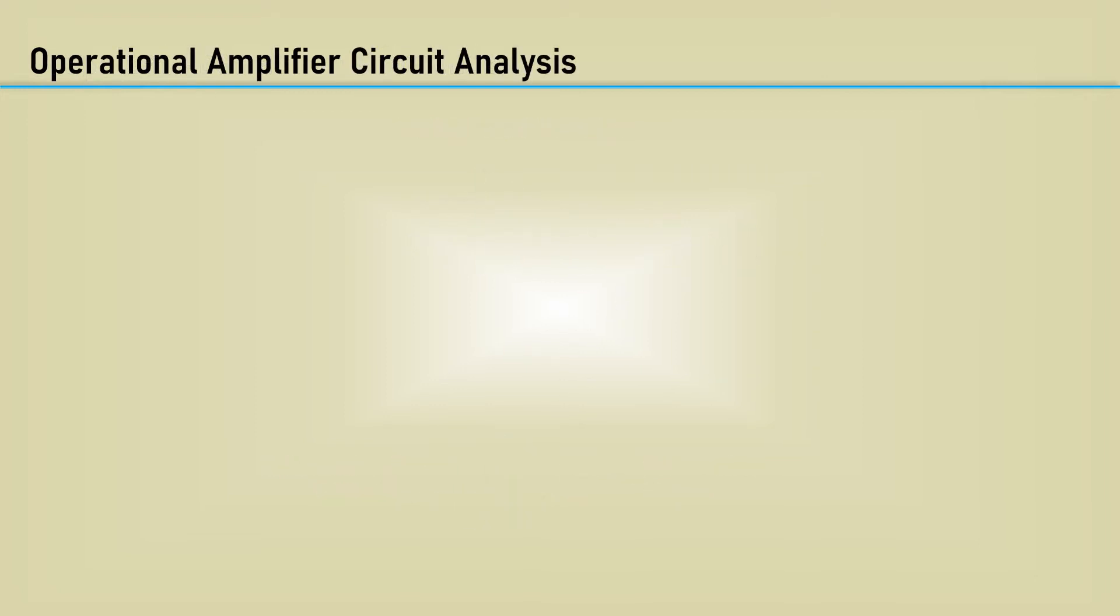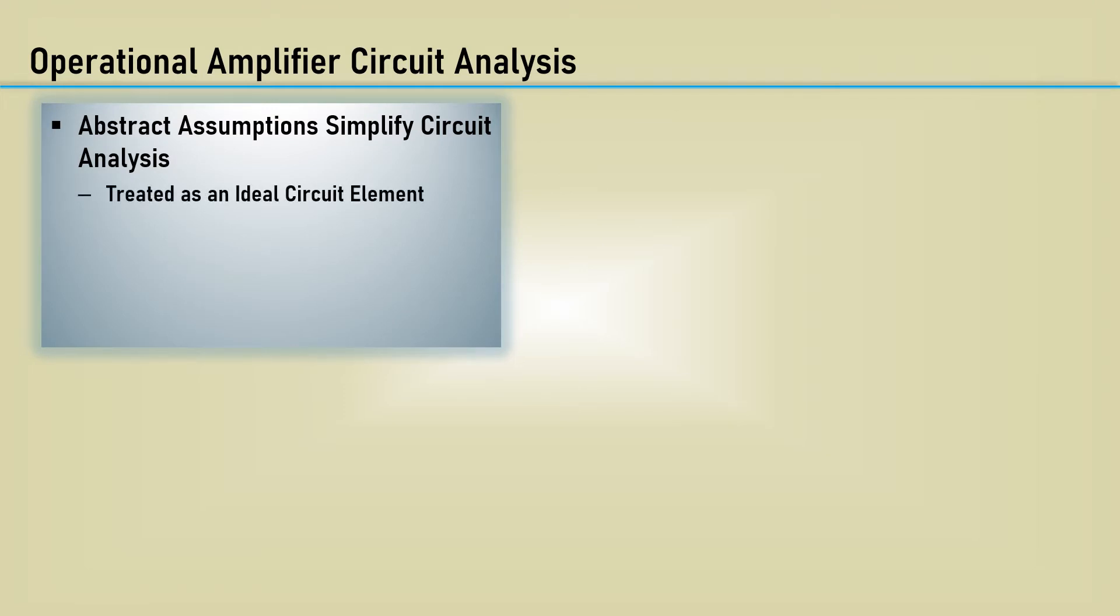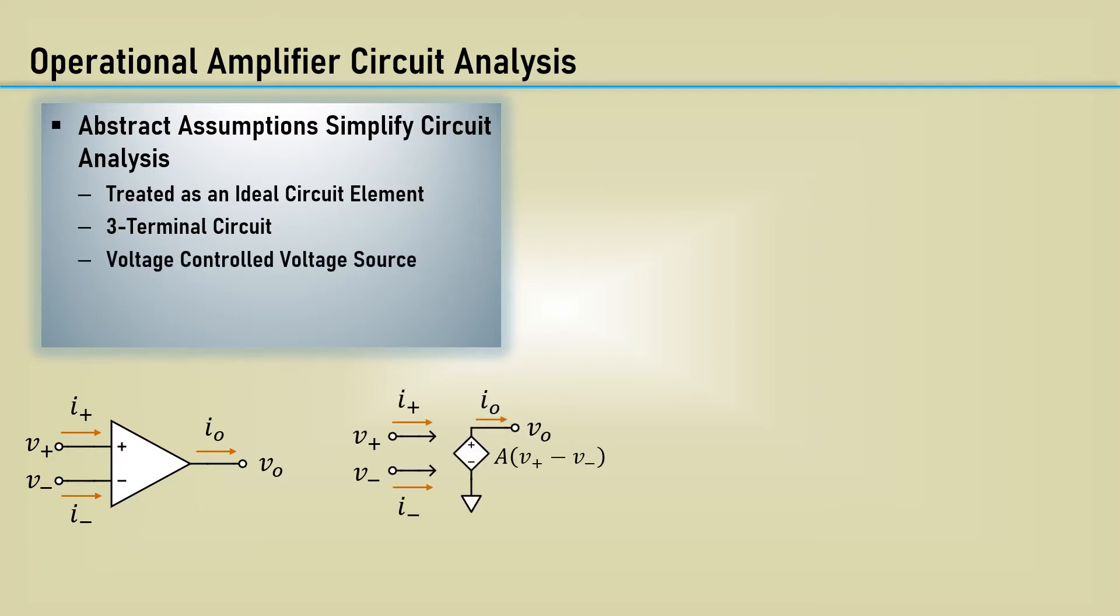We just talked about the graphical abstraction. The other important abstraction is used to perform circuit analysis. These abstract assumptions greatly simplify the circuit analysis. It treats the op-amp like an ideal circuit element in the form of a three-terminal circuit box. Textbooks often use a voltage-controlled voltage source like this one. This abstraction makes it easy to use Kirchhoff's current and voltage laws, Ohm's law, and superposition.